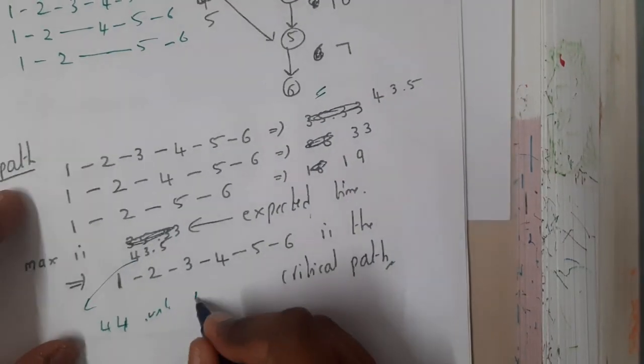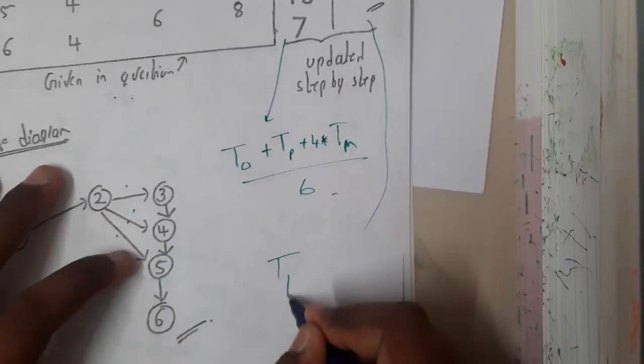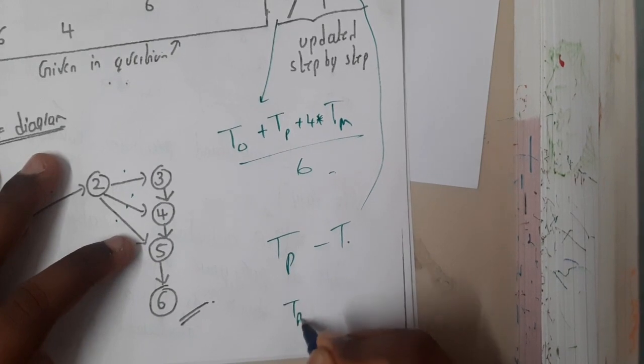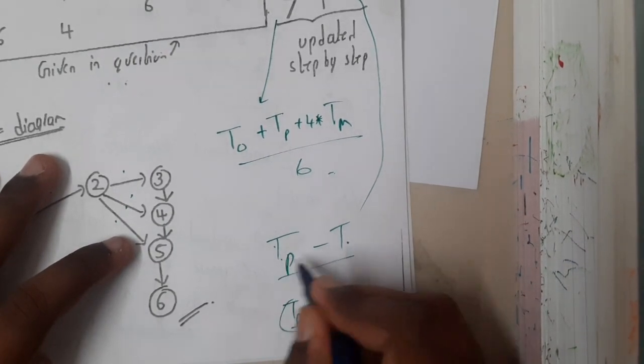Similarly, you can calculate the variance also. I hope everyone remembers the formula of variance: tp minus to. The trick is tpo, divided by 6, so tpo in that way. I hope everyone got some basic idea on this problem solving.